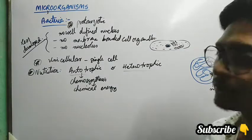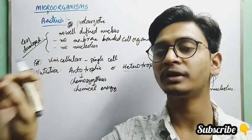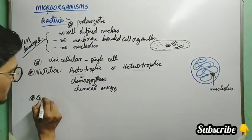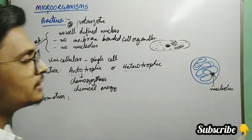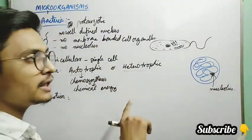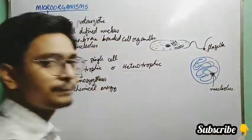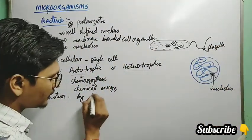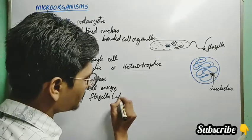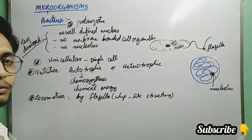Bacteria can also be heterotrophic, depending on other smaller organisms for their food. Regarding locomotion — movement from one place to another — bacteria have a tail-like or whip-like structure called flagella. Locomotion in bacteria is carried out by these flagella, which are whip-like structures that allow them to move from one place to another.